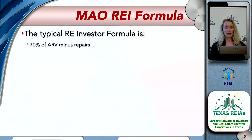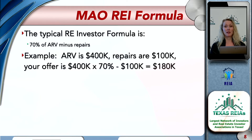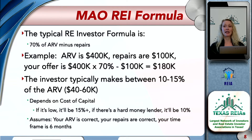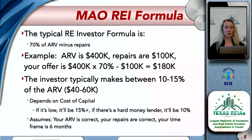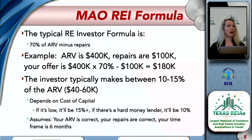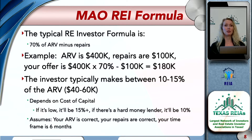Let me go through the maximum allowable offer formula — MAO stands for maximum allowable offer. Typically as a real estate investor, you make offers at 70% of ARV minus repairs. So if the ARV is $400,000 and repairs are $100,000, your offer is $400,000 times 70% = $280,000, minus $100,000 in repairs — your maximum allowable offer is $180,000.